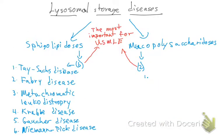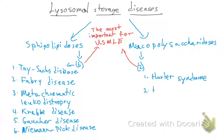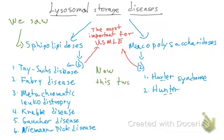Great job! We've now covered all the sphingolipidoses: Tay-Sachs disease, Fabry disease, metachromatic leukodystrophy, Krabbe disease, Gaucher disease, and Niemann-Pick disease. Now we're going to look at the mucopolysaccharidoses — we have two: Hurler syndrome and Hunter syndrome.